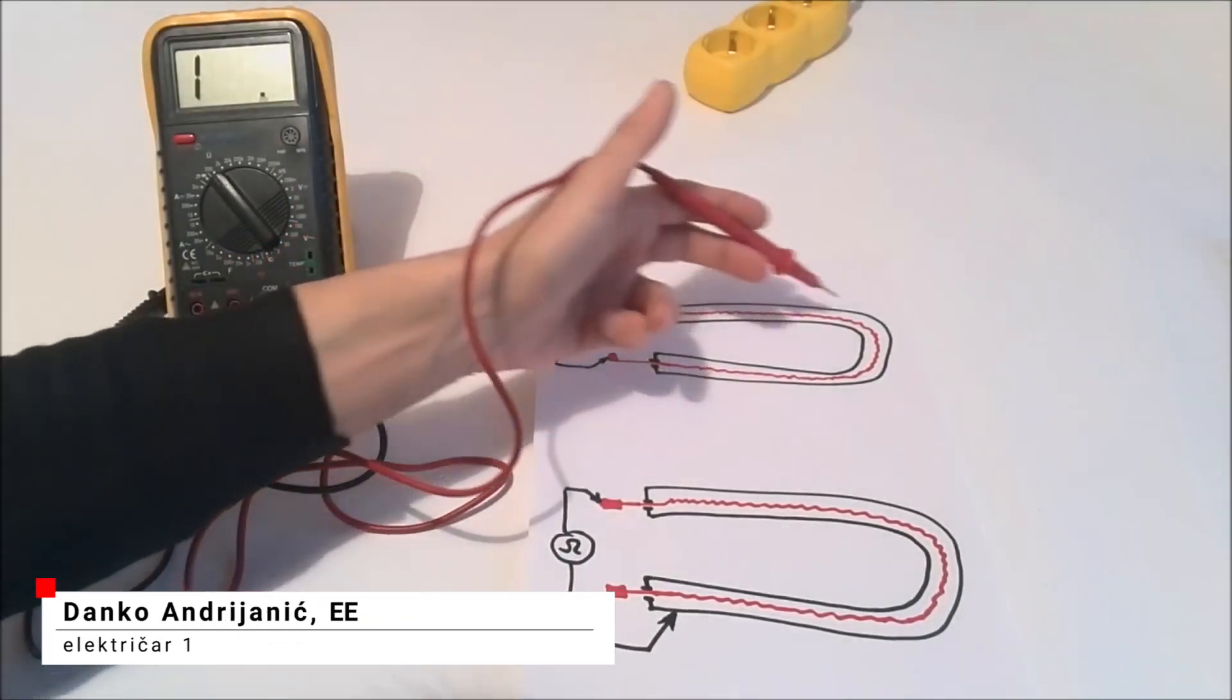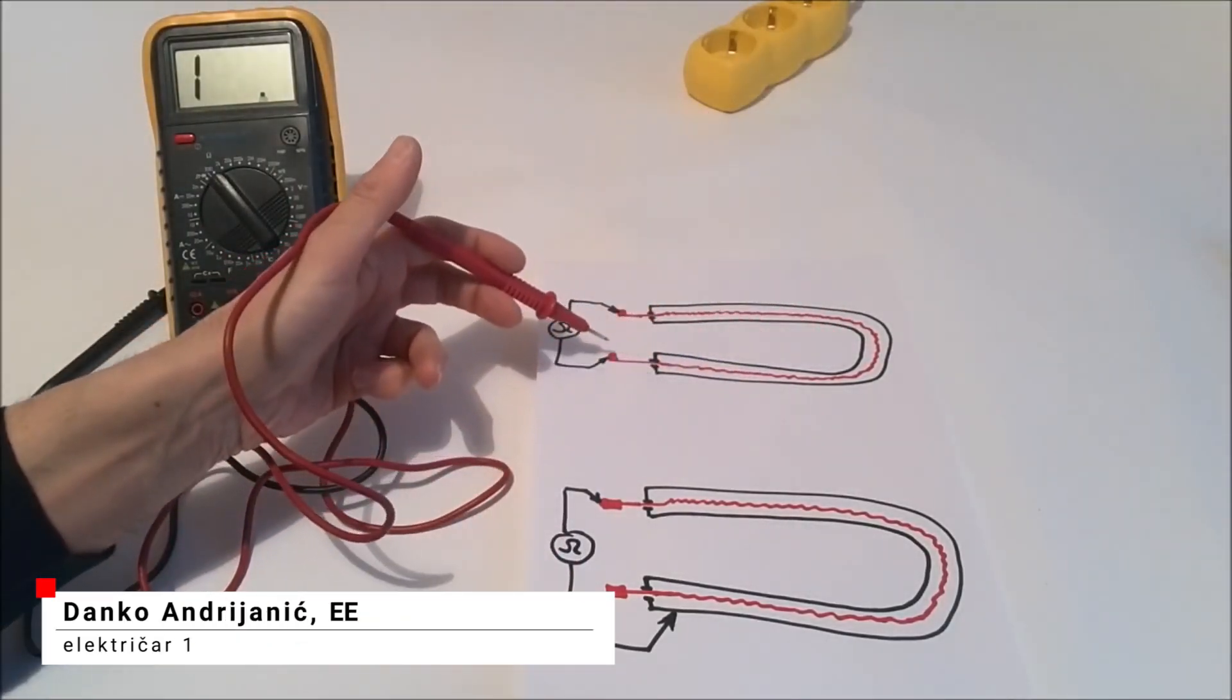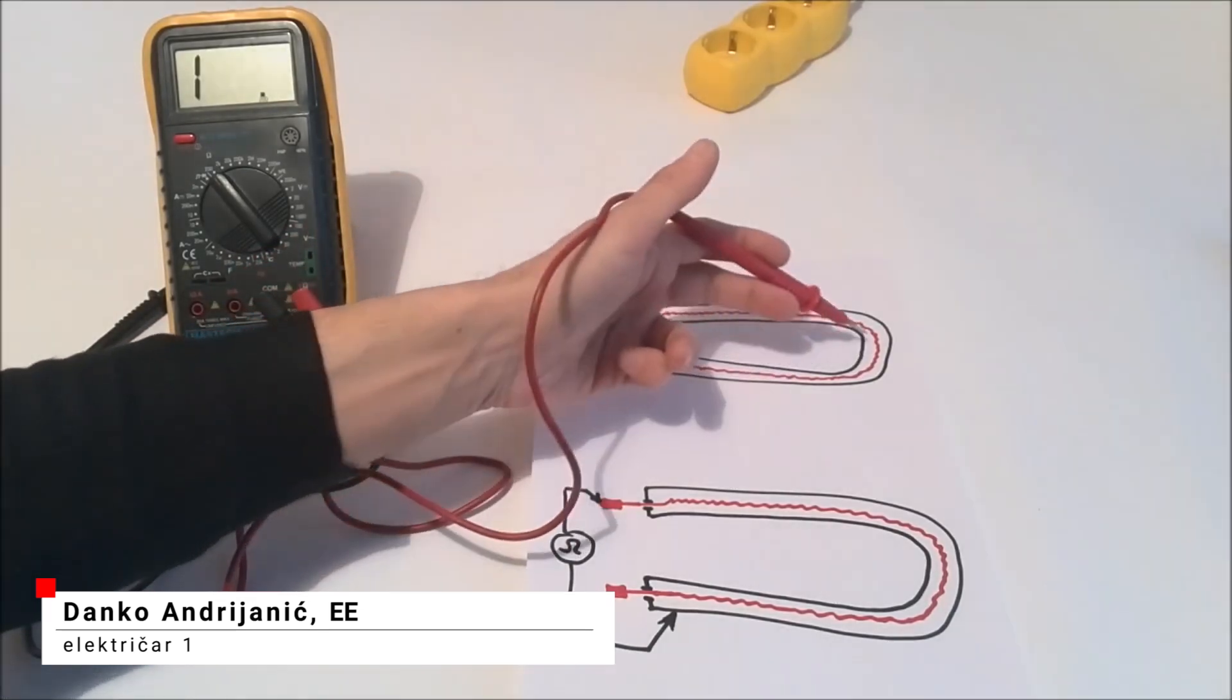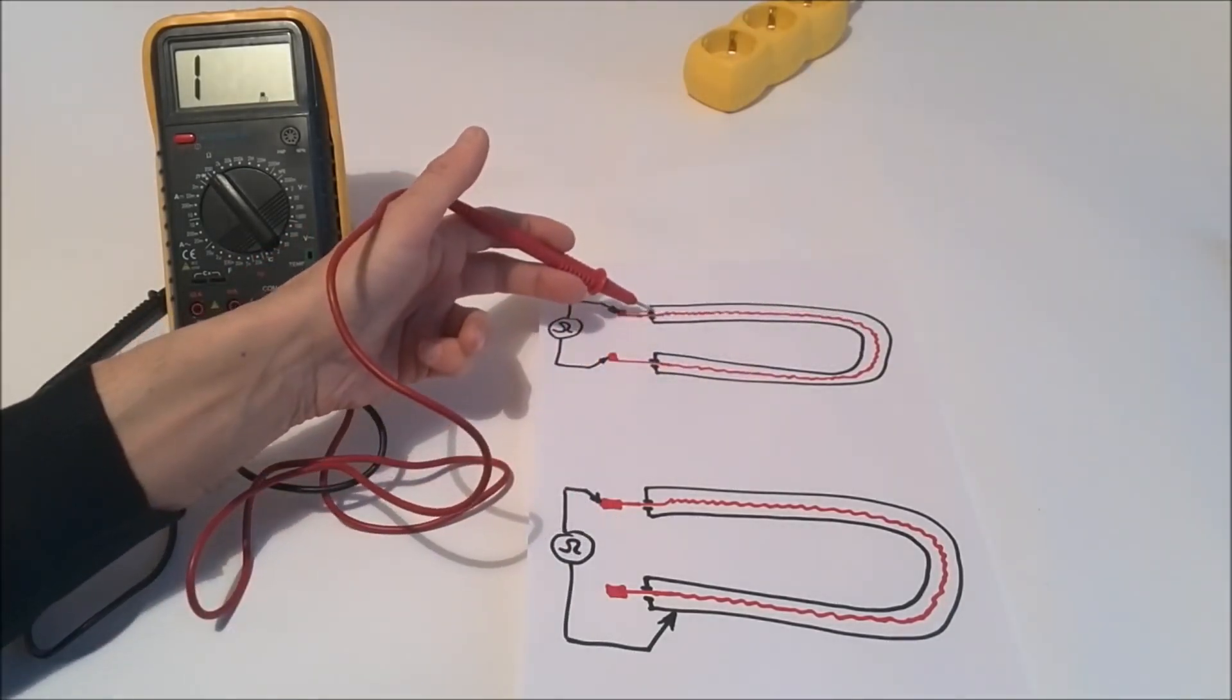The pipe heater consists of a pipe presented with a black line here and the heating thread that is inside the pipe along its axis presented here in red.